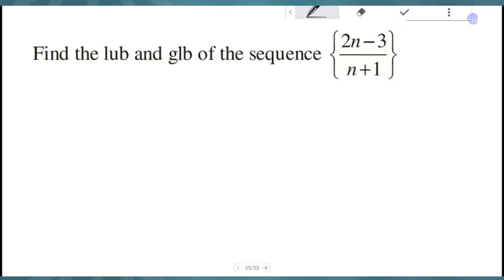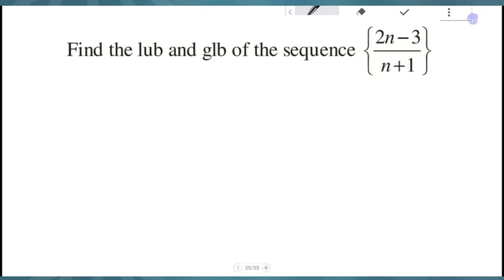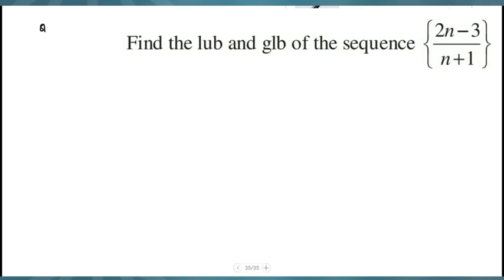Find the least upper bound and the greatest lower bound of the sequence (2n - 3)/(n + 1). The sequence is a graph plot. The sequence is the equivalent of a rational expression. So f(x) is equal to (2x - 3)/(x + 1).